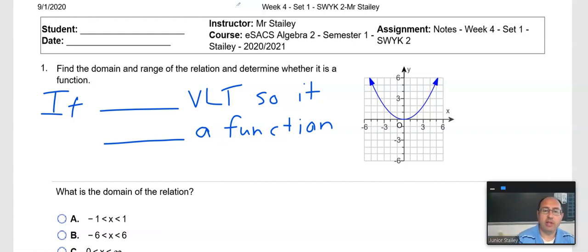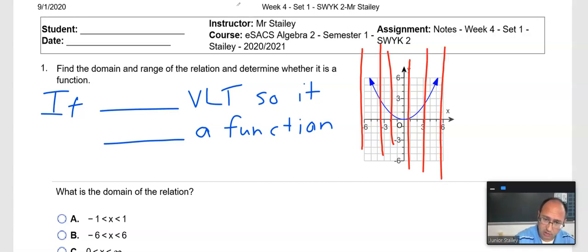Find the domain and range of the relation and determine whether it is a function. Might as well determine if it's a function right away. Drawing some vertical lines through there. Hey, looks like it passes the vertical line test. So it is a function.